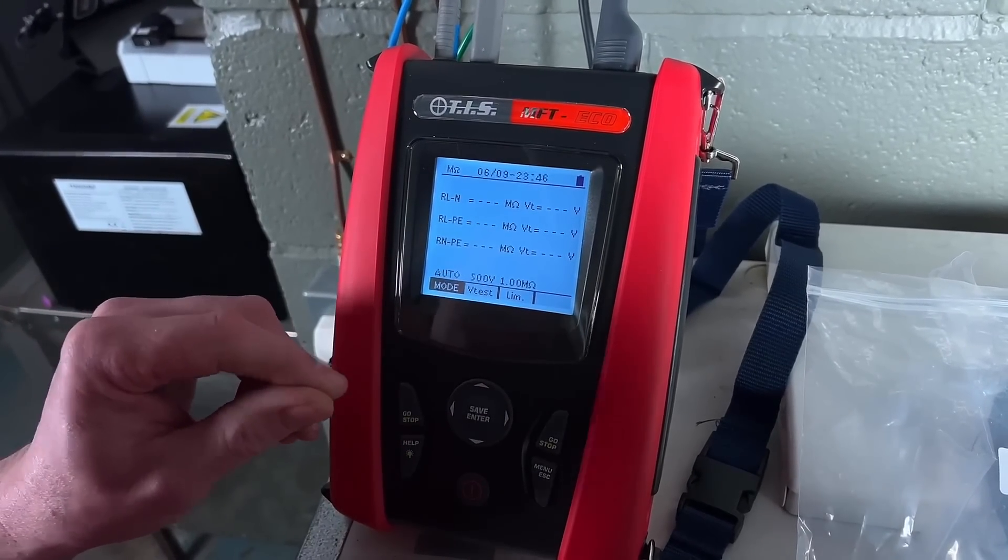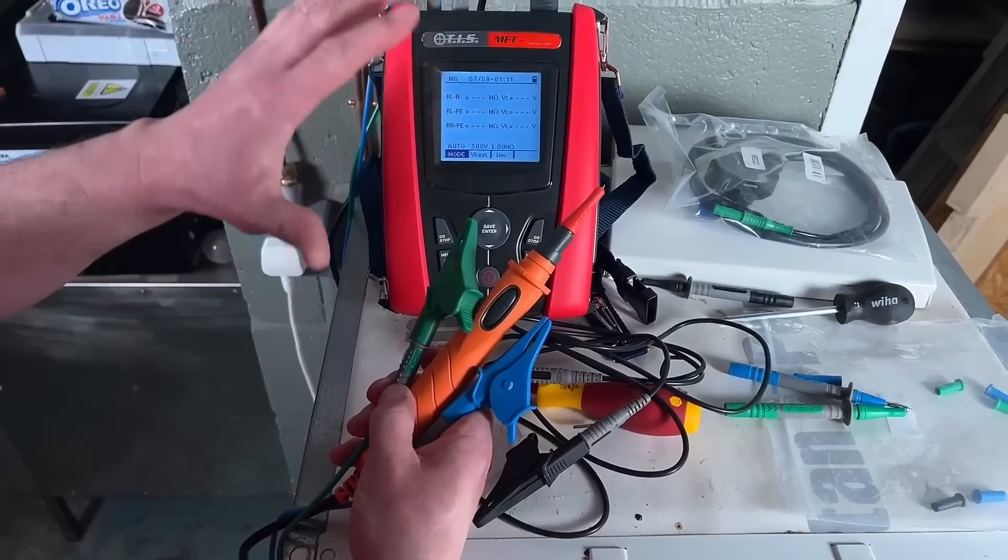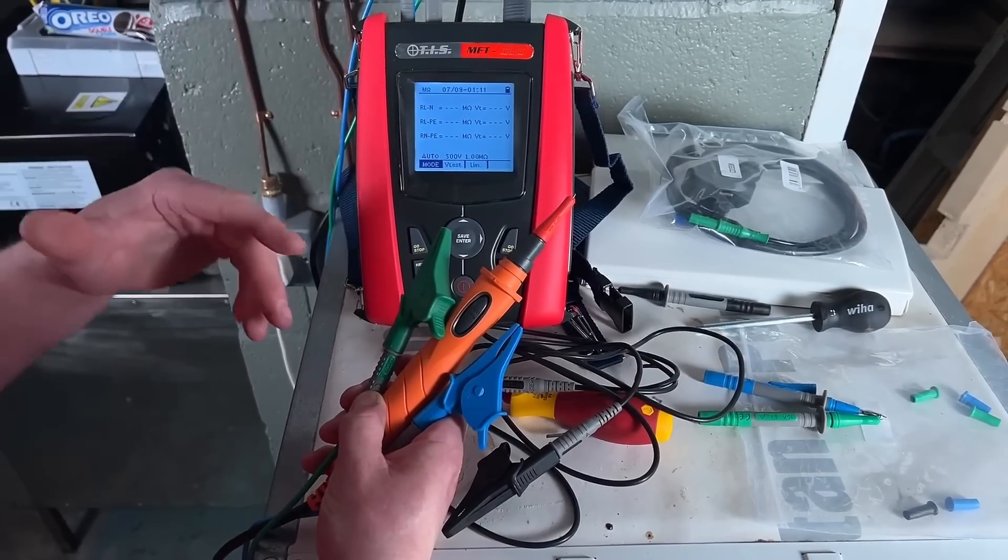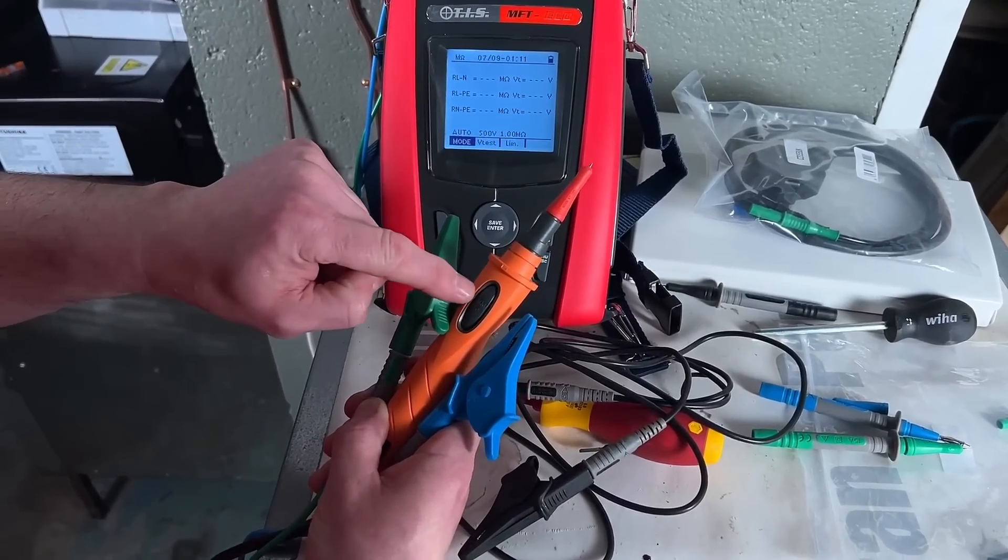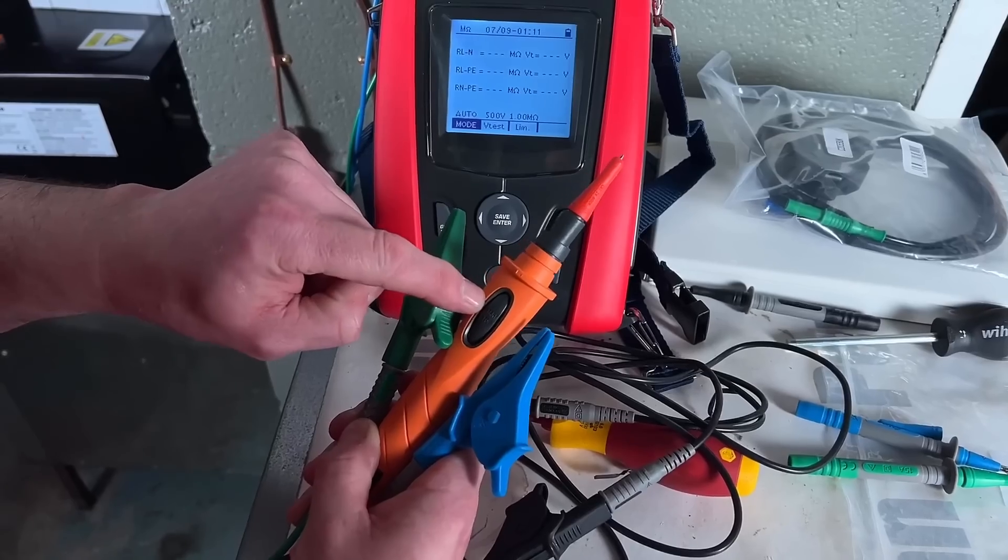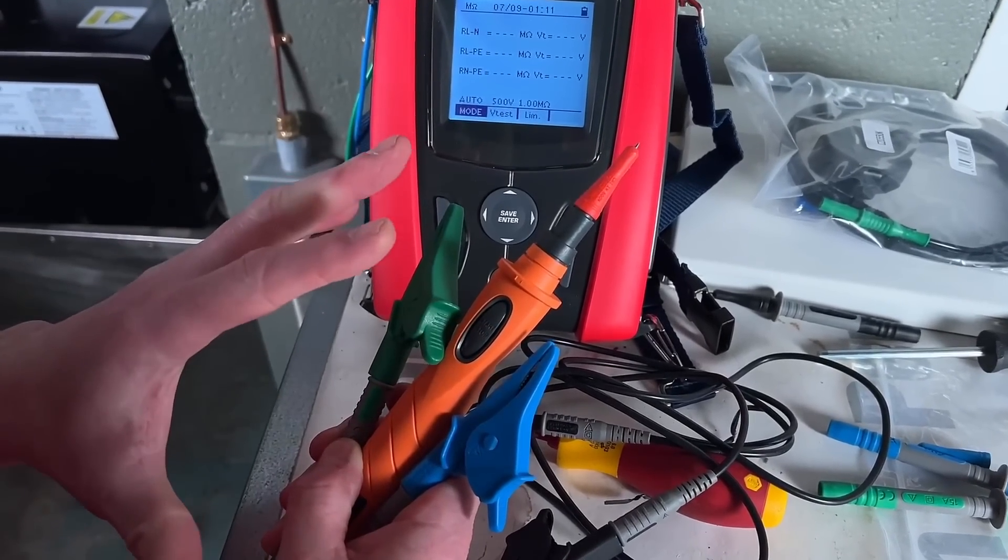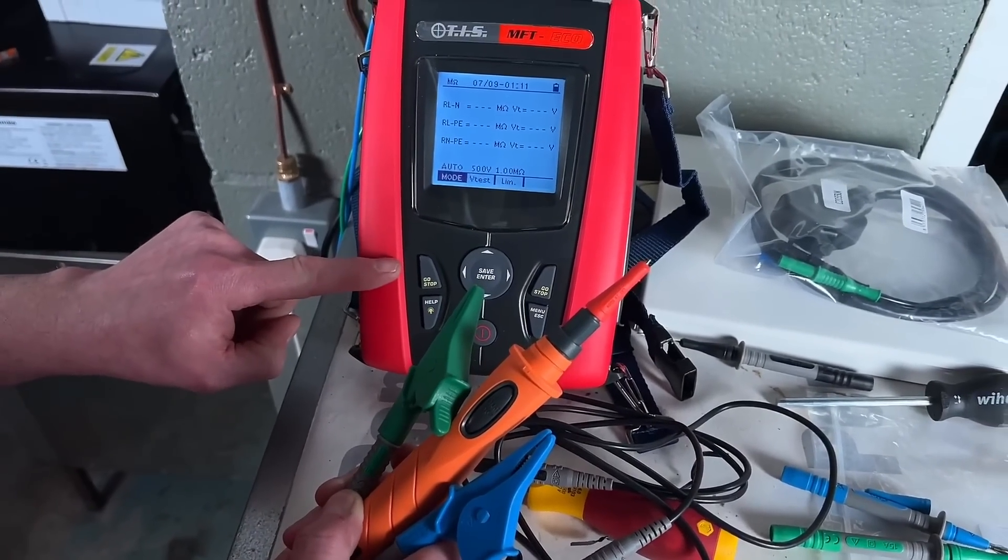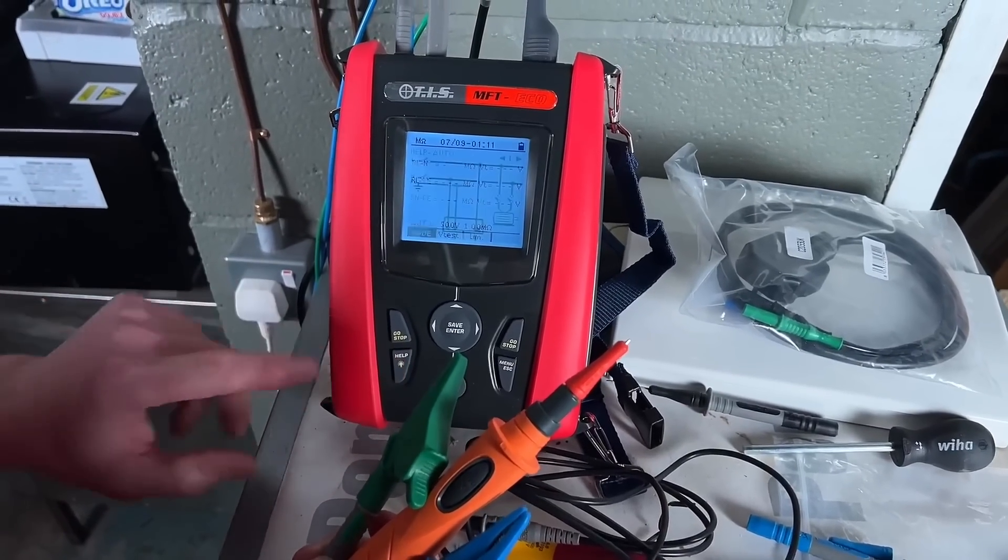So we're going to see how well Rick's done about removing those loads. I've connected my lead into my MFT eco and I'm ready to carry out the test. I've chosen the tip commander lead because I can press and start my test by using this button here, meaning I don't have to take my hands off in order to press the go button on the machine.